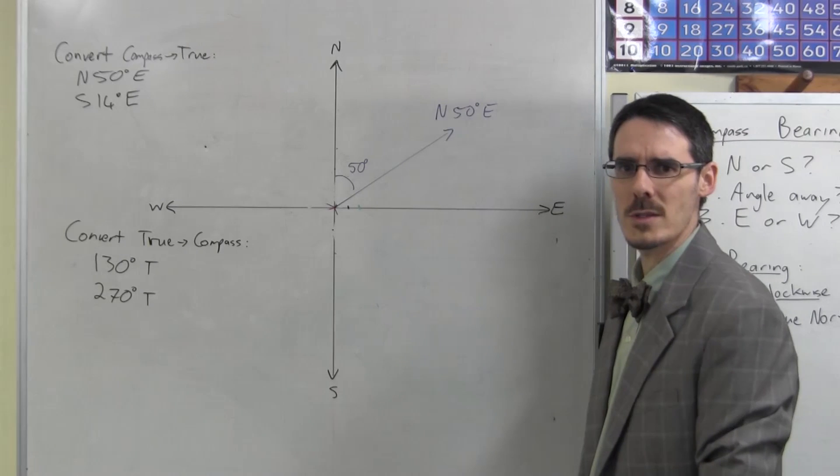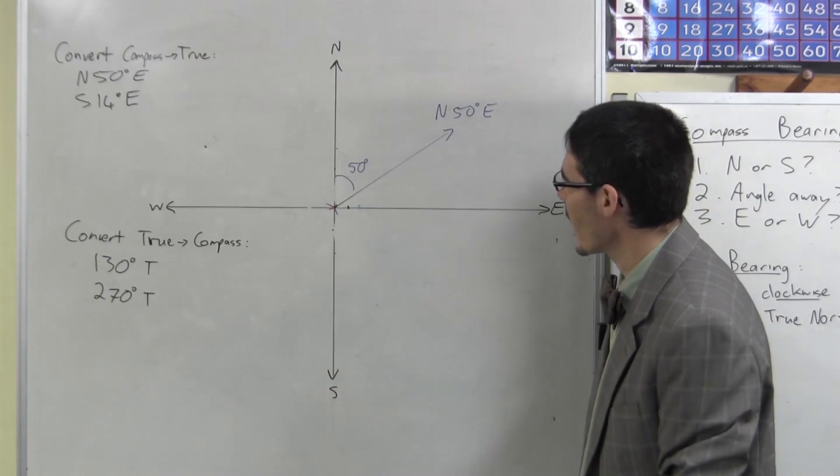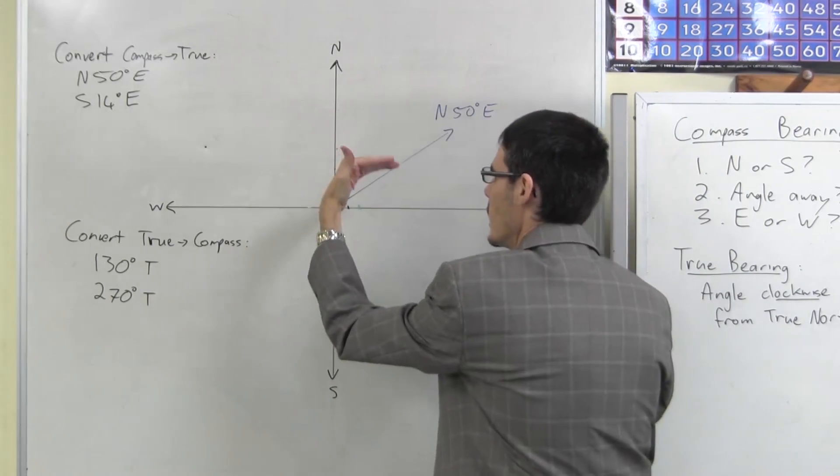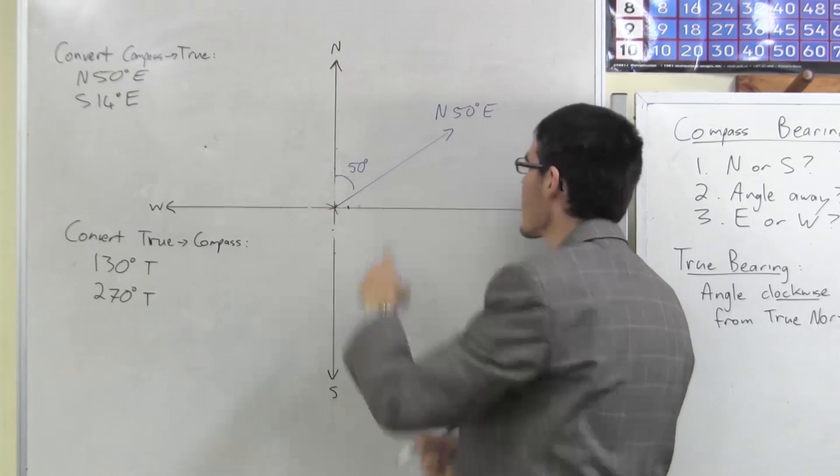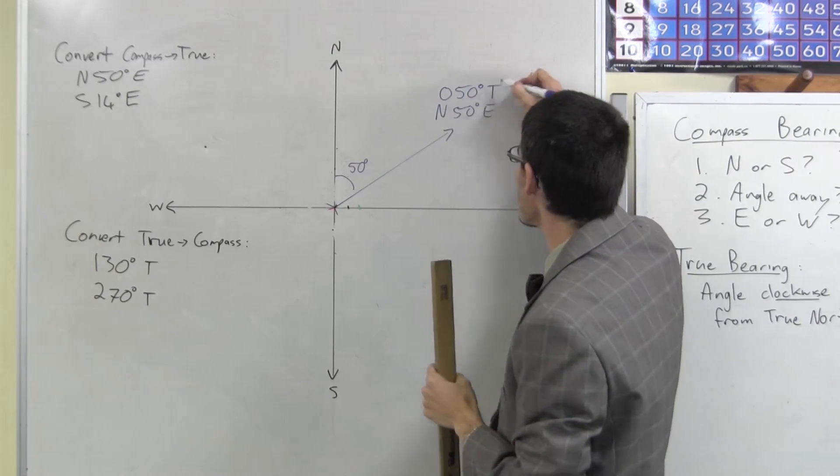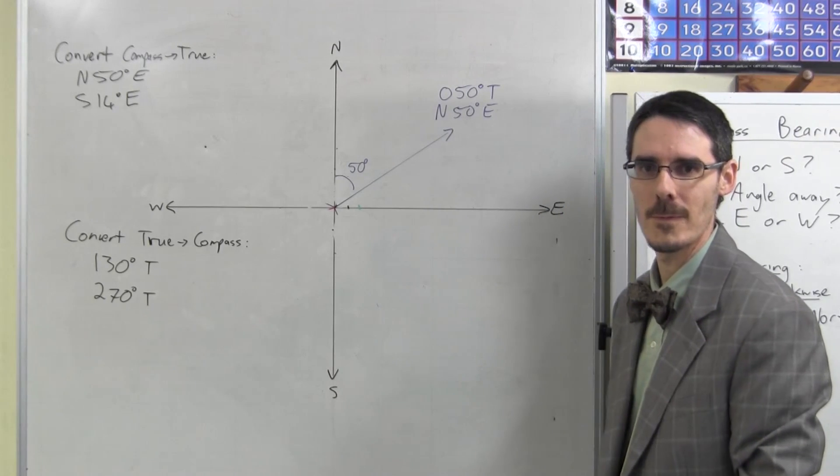What's the true bearing? What's the angle measured clockwise from true north? It's just the 50 degrees, isn't it? So we write it in three digits and we put a T for true bearing. 50 degrees true.